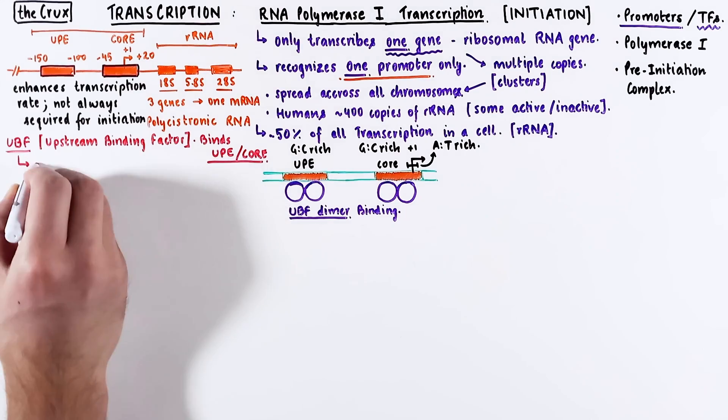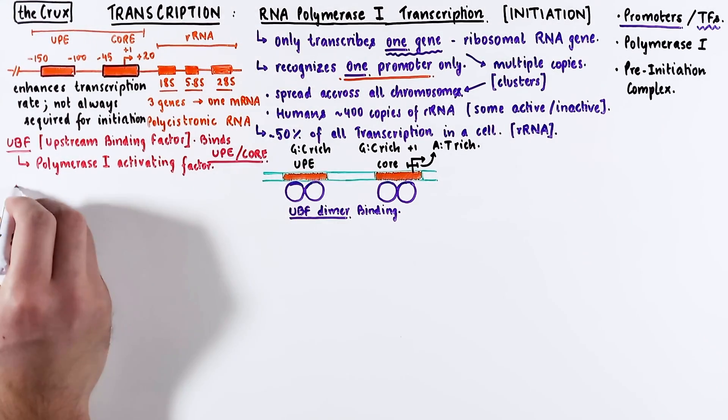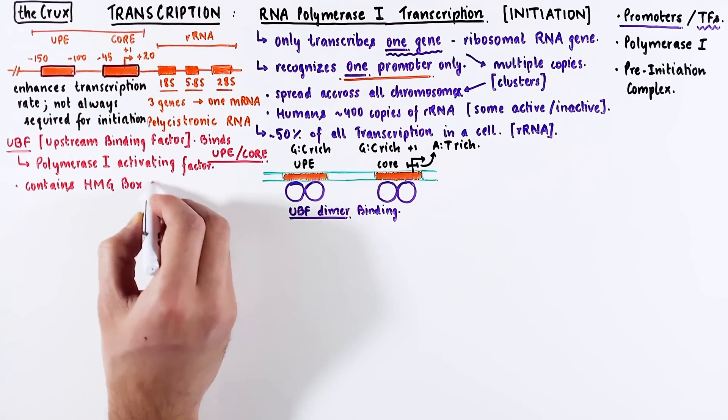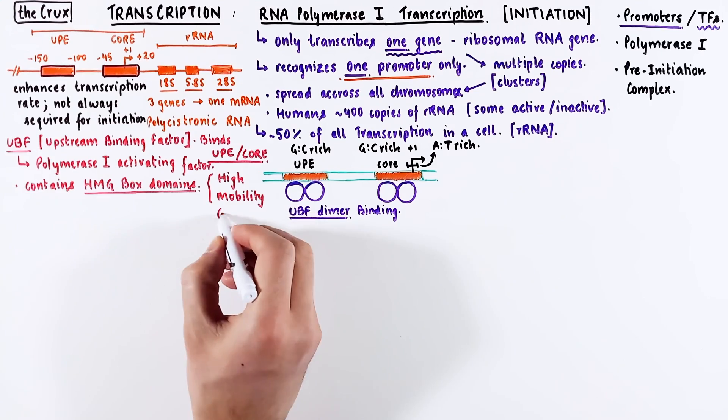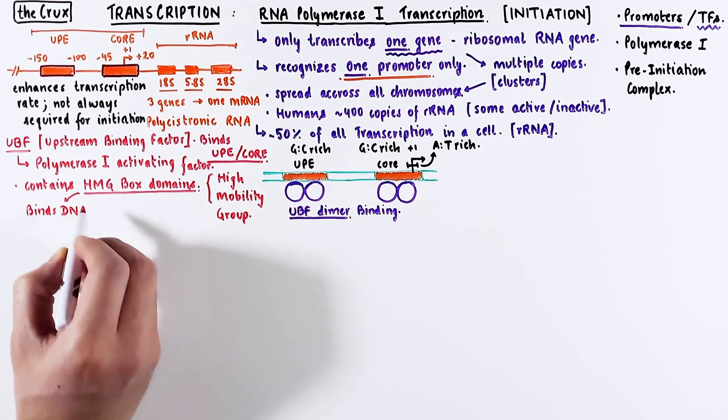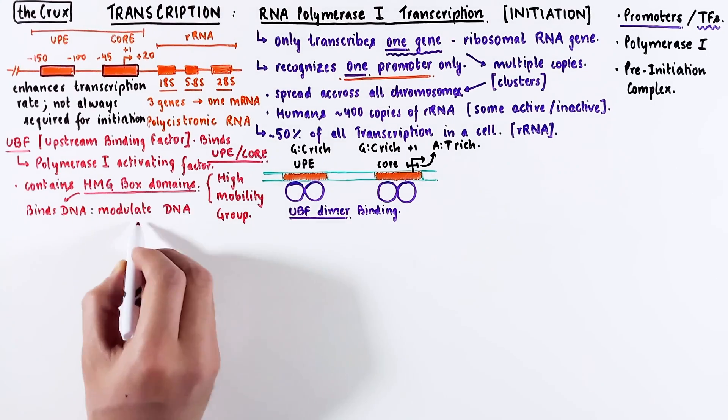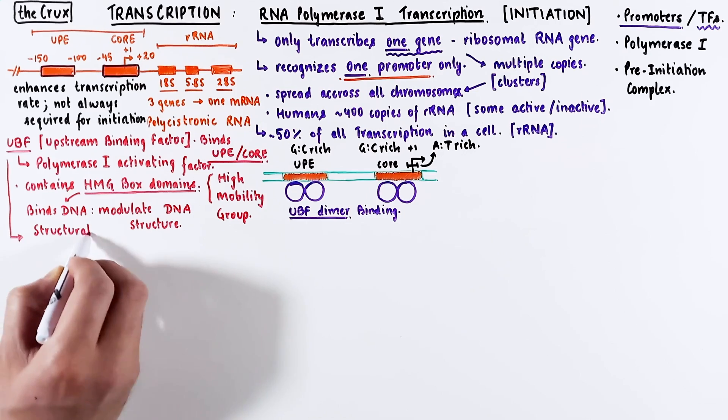UBF is also known as polymerase 1 activating factor, and it contains HMG box domains. The HMG box domains stands for high mobility group domains. The function of the HMG box is to bind the DNA, and upon binding, they can modulate the DNA structure. It'll become clear in a moment how this works.